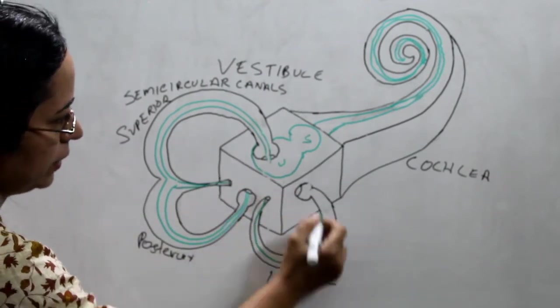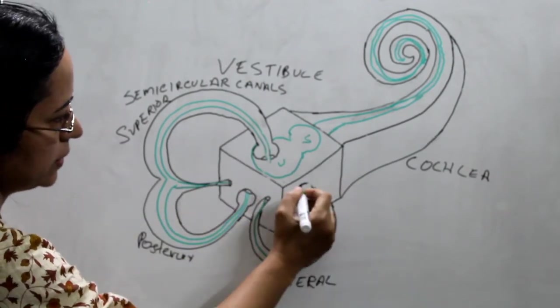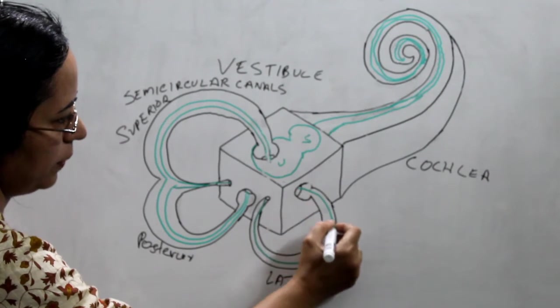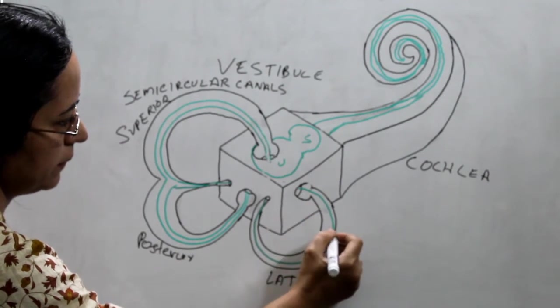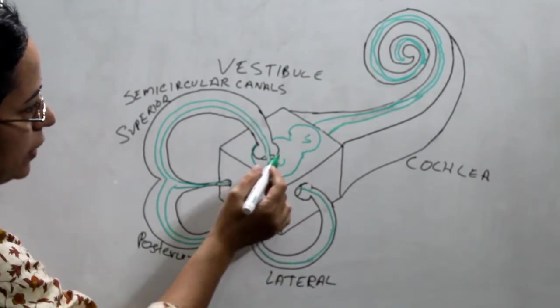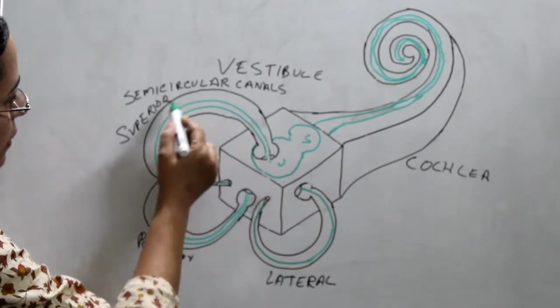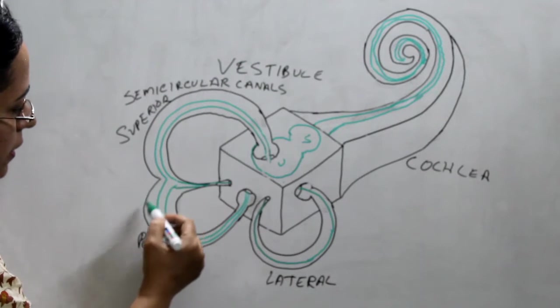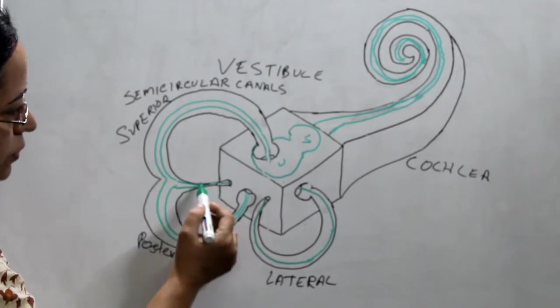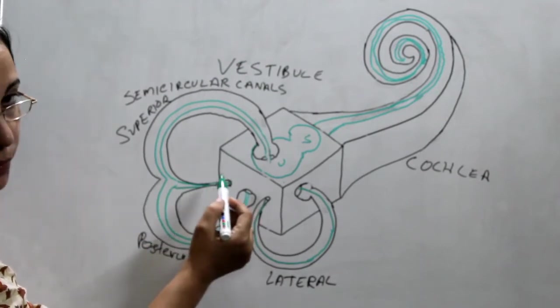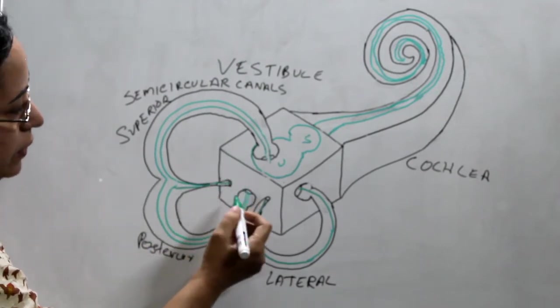Each semicircular duct has an ampullated end and a non-ampullated end. The non-ampullated ends of the superior and the posterior join together to form the crus commune. And these are the ampullated ends.